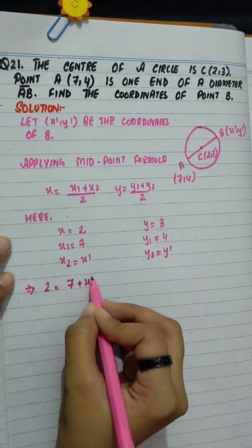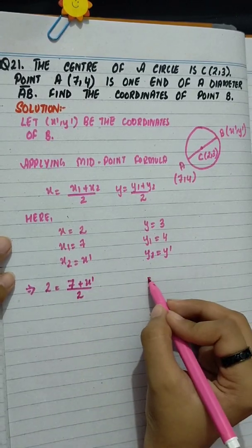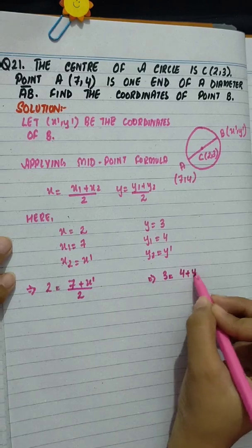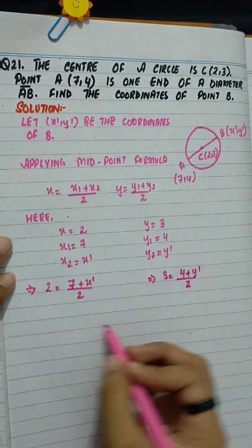2 equals 7 plus x' divided by 2. 3 equals 4 plus y' divided by 2.